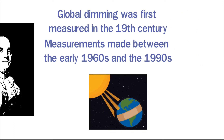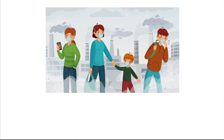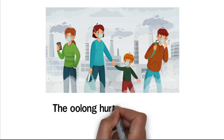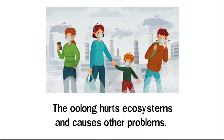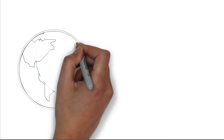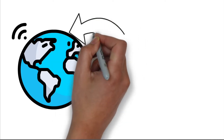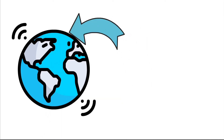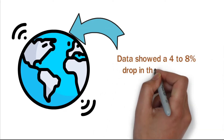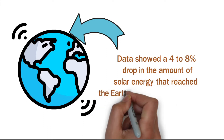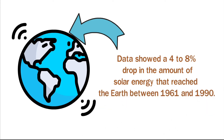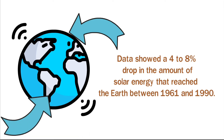Human activities are the main cause of global dimming. Pollution is the main source of most of the particulates in the air above the earth. The dimming cools things down on earth, which disrupts ecosystems and causes other problems. Global dimming has different effects on different parts of the world. There is a lot of evidence that the northern hemisphere is the worst affected. Data showed a 4 to 8% drop in the amount of solar energy that reached the earth between 1961 and 1990. People in the southern hemisphere aren't as affected by global dimming as people in the northern hemisphere.